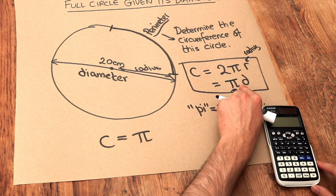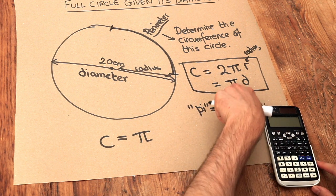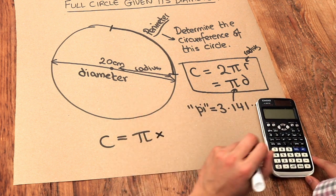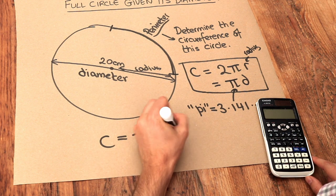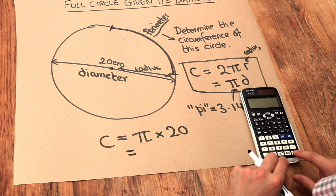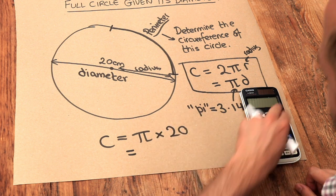And then it's multiplied by the diameter. Remember, when you have things next to each other in algebra, it means you multiply them together. So you multiply by the diameter of 20. And if you do that, multiply by 20, that gives you 20 pi.